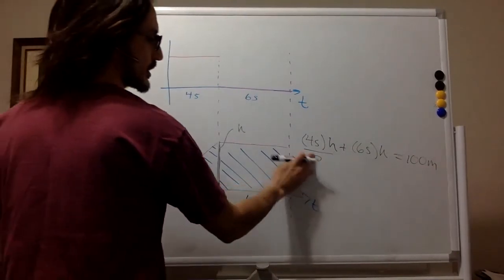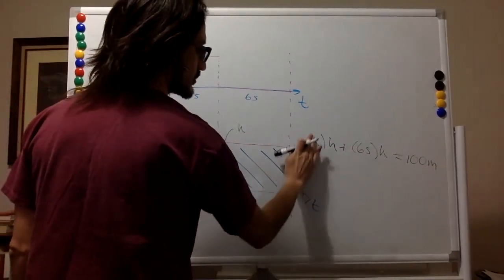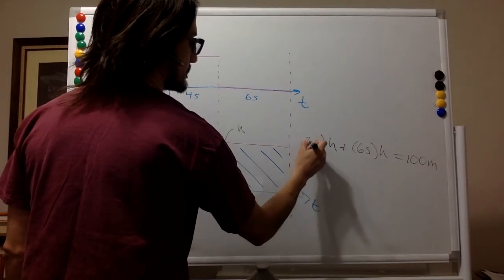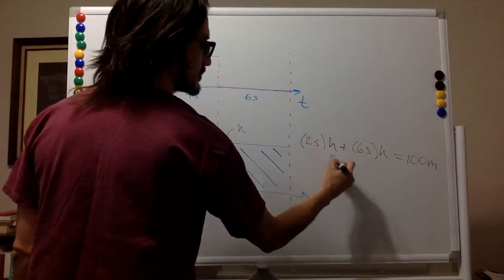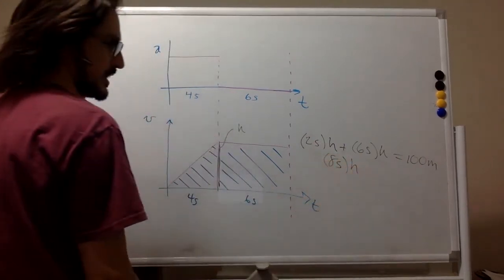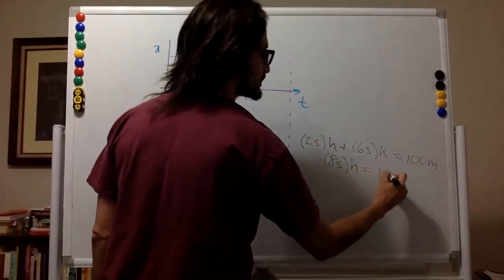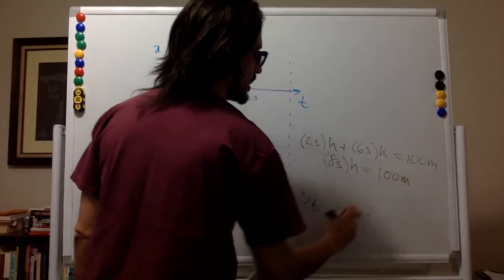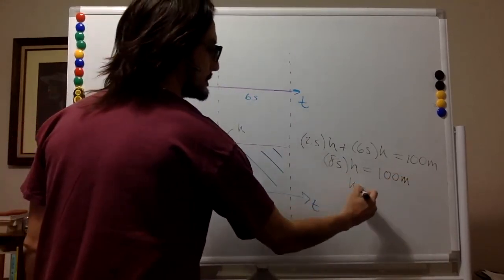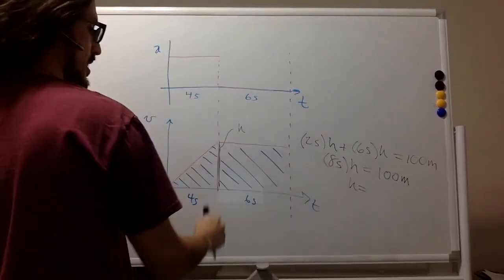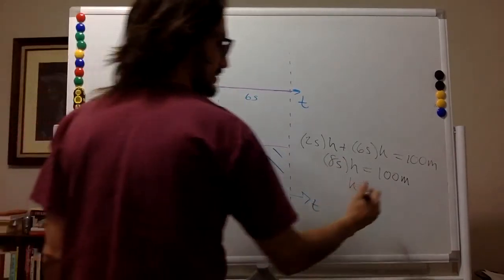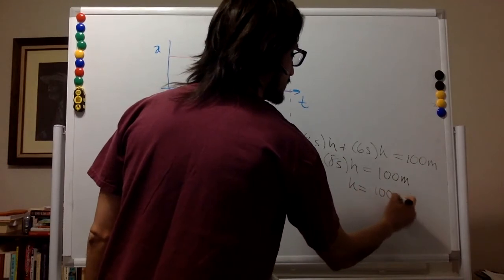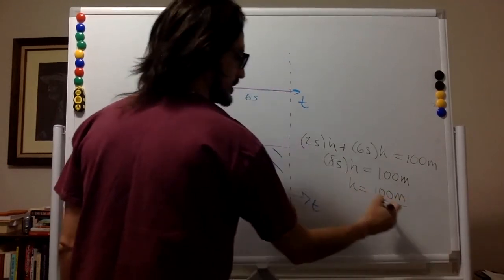So four seconds divided by two, that's two seconds. So this is just eight seconds times h equals 100 meters. So h, the height of the triangle and the rectangle, should be 100 meters divided by eight seconds.